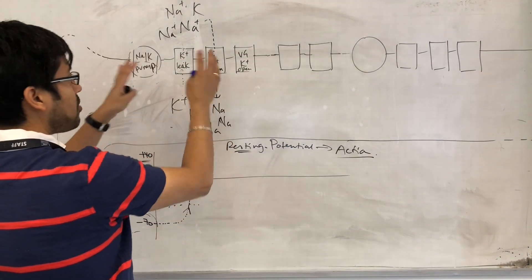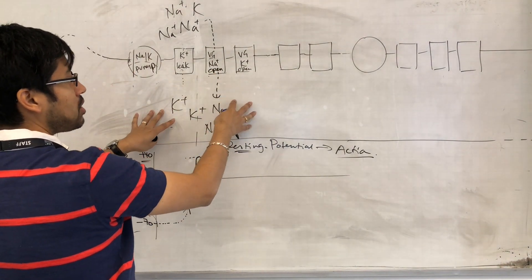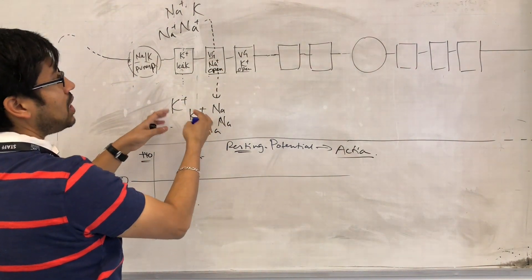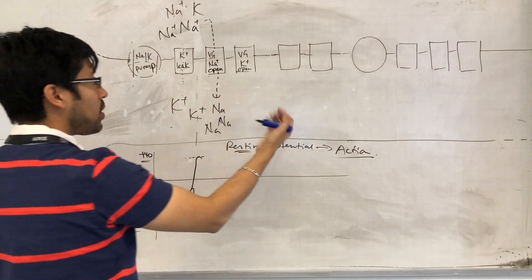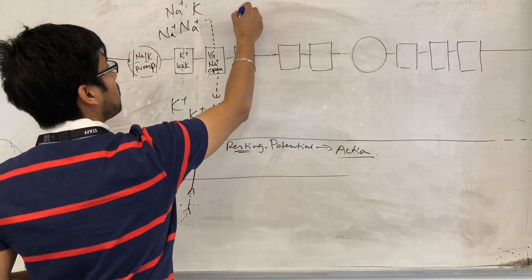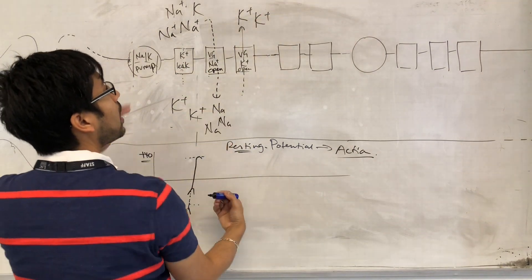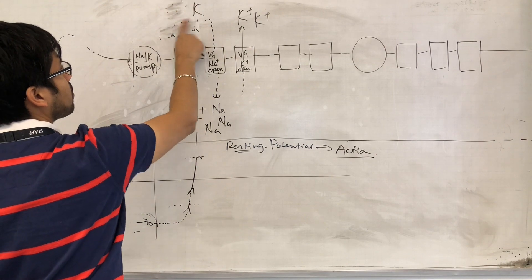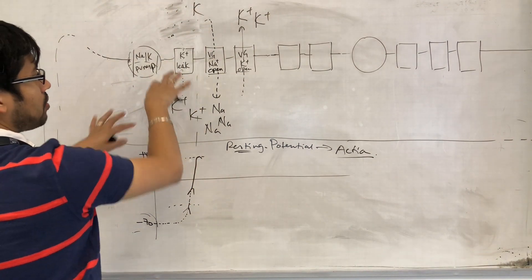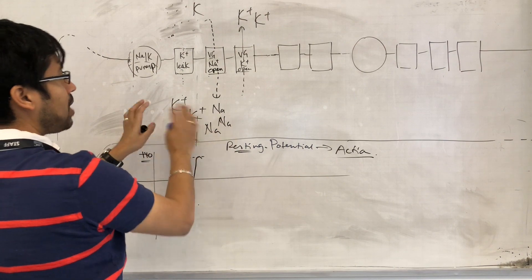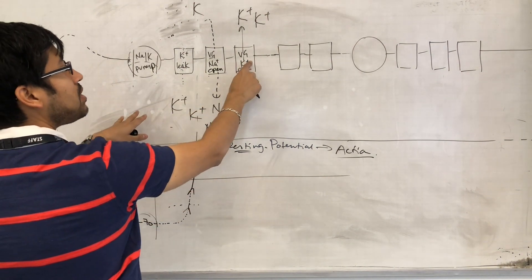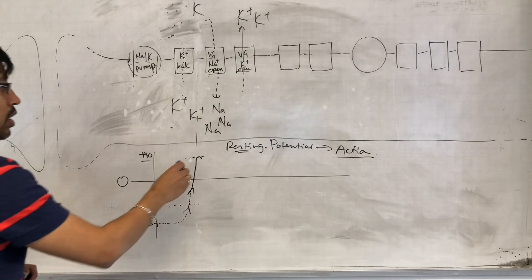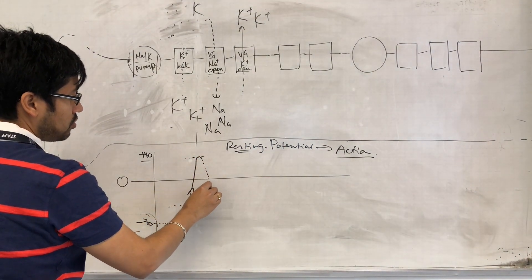When they open, remember, at this point the inside of the cell is much more positive than the outside. Also, we do have a lot of potassium inside, much more than the outside. So at this point, positive ions — namely potassium — start to go back out. Because there's so much sodium and potassium now inside the cell, when these potassium channels open, the potassium moves out of the axon, causing repolarization to begin.